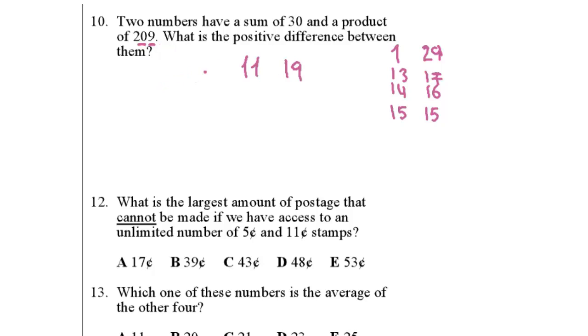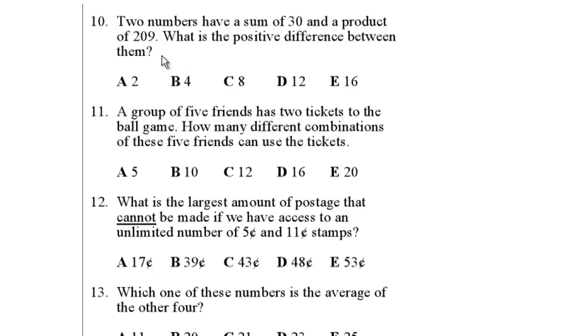You may not want to multiply these two numbers. Well estimate. 19 is almost 20, 11 is almost 10. 20 times 10 is 200, so that's really close. Let's make sure. 19 times 10 is 190, 19 times 1 is 19. So the product of 11 and 19 is 190 plus 19 which is 209. So these are my two numbers, 11 and 19. The difference between them is 8. So the answer is C.